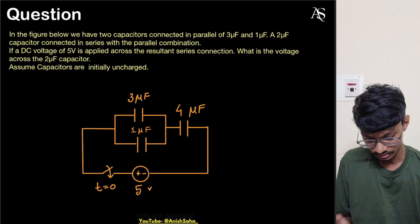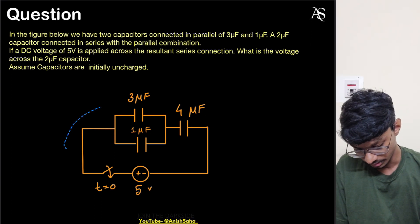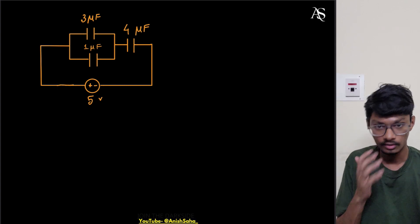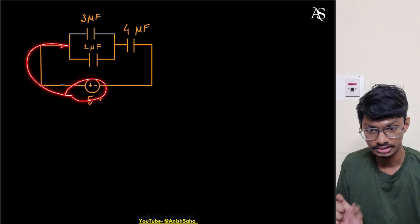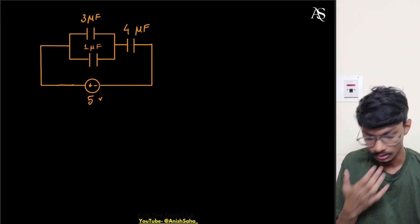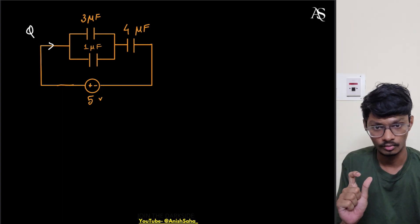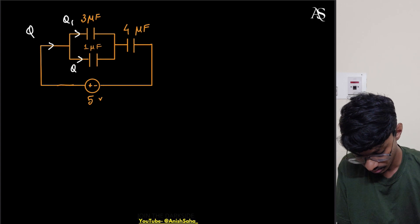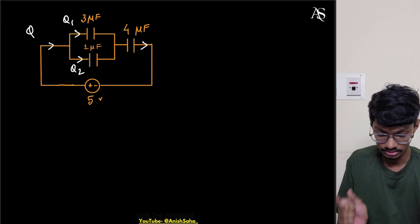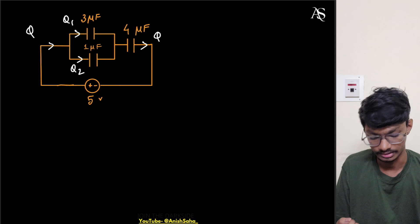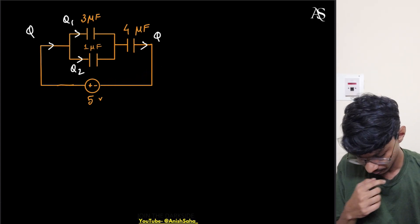For that, what you have to do is first draw the circuit for t equals zero and see what is happening. So basically the switch is off at t equals zero. Now what will happen is this battery will supply some charge and instantly charge all these combinations of capacitors. Let's say this battery supplies q amount of charge — some will be divided in the parallel combination, so this will be q1 and q2. This charge q1 plus q2 equals q, and whatever charge leaves the positive terminal of the battery should come into the negative terminal.